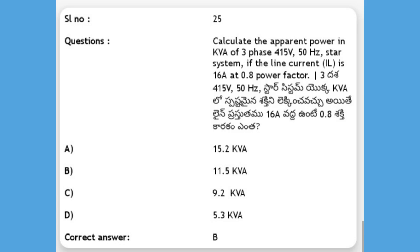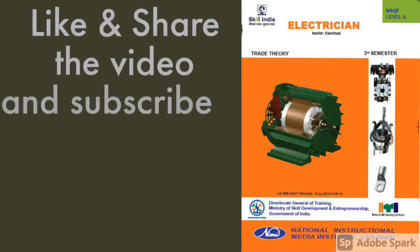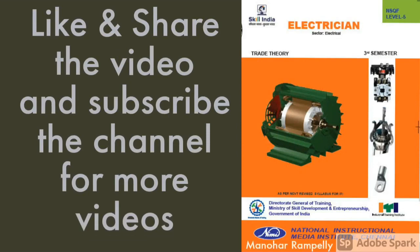The apparent power formula is: √3 × V_line × I_line. So, √3 × 415 × 16 = 11,500 VA = 11.5 KVA.